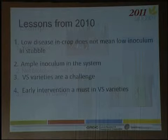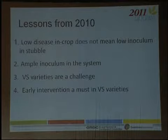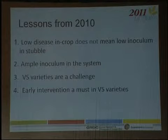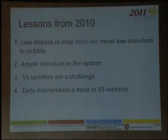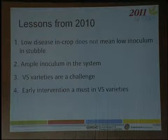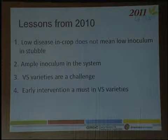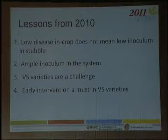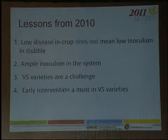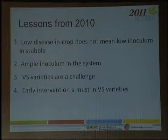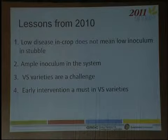The first point I want to make is that low disease in crop does not necessarily mean low inoculum in your stubble. Yellow spot and the net blotches are classical stubble-borne diseases. Through the drought years those diseases were at relatively low levels within crop, but these fungi are very happy as pathogens and equally as happy as saprophytes — they'll grow on dead straw.